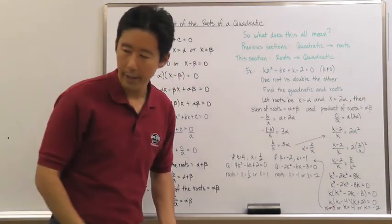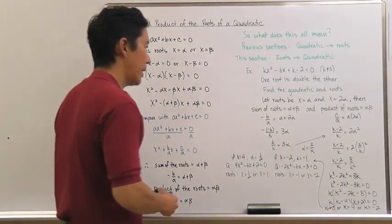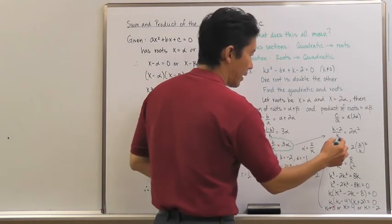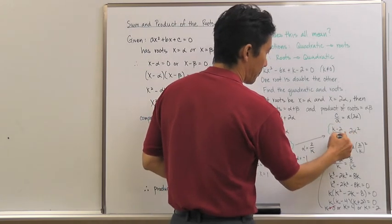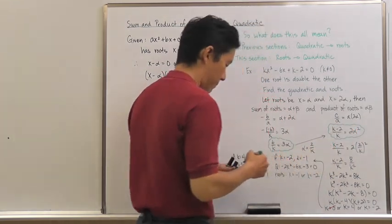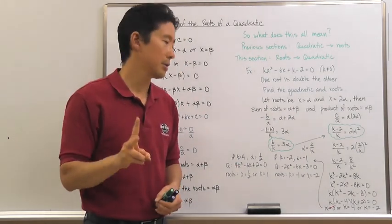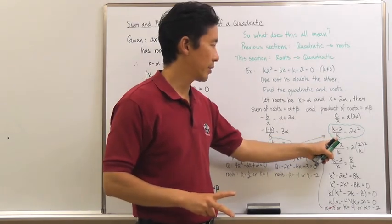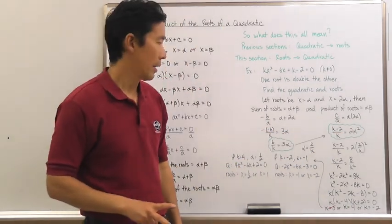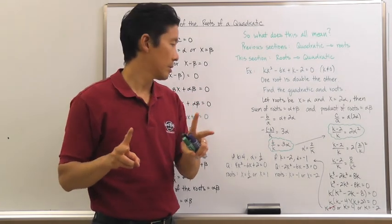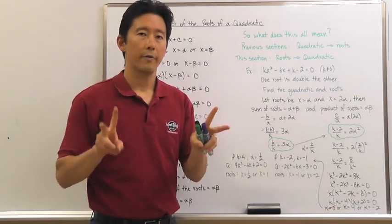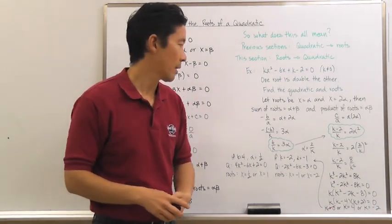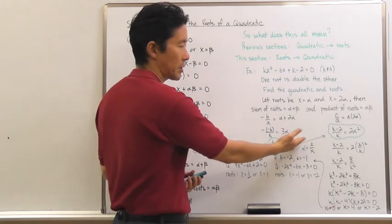Take a look at what we've got. We have the equation 6/k = 3alpha, and we have the equation (k − 2)/k = 2alpha². We have two equations and two variables — k and alpha. If we have two equations and two variables, we can solve using a system of equations.